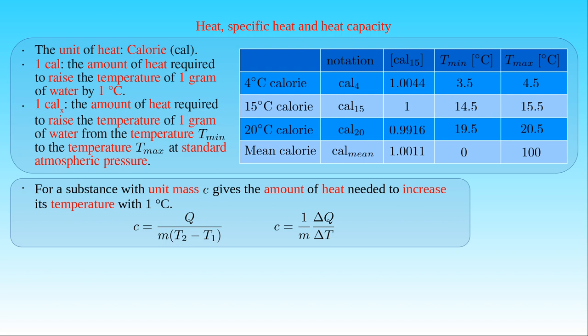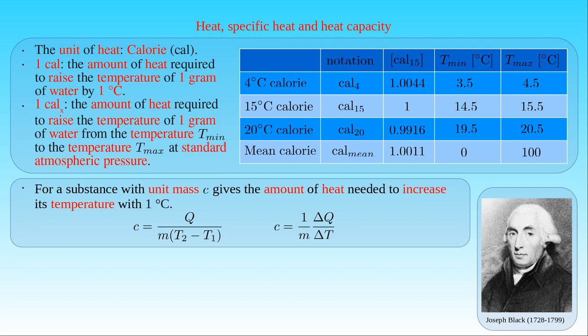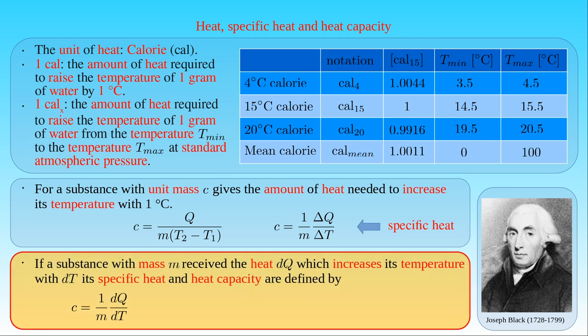We have already stated that the value of C depends on the physical properties of materials. When Joseph Black, a Scottish physicist and chemist, studied the transfer of heat between bodies, he found that different substances with equal masses needed different amounts of heat to increase their temperature by the same amount. Black introduced the concept of specific heat for the proportionality constant between heat and the increase in temperature of a body with unit mass. For a body with unit mass, specific heat gives the amount of heat needed to increase its temperature by one degree Celsius. Generally, if a body with mass m receives an infinitesimal amount dQ of heat and its temperature increases by dT, then its specific heat C is 1 over m times the ratio of dQ to dT, that is, 1 over m times the derivative of Q with respect to T.